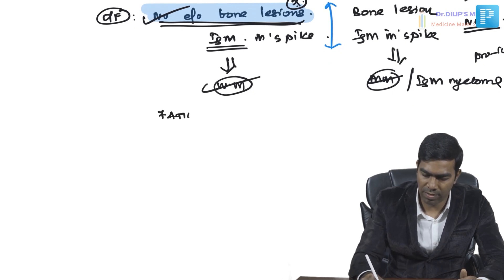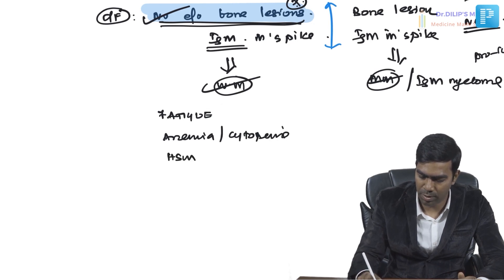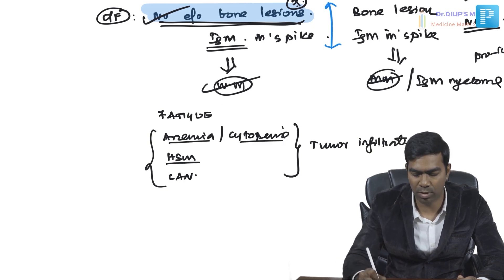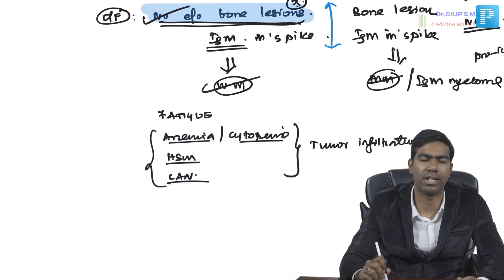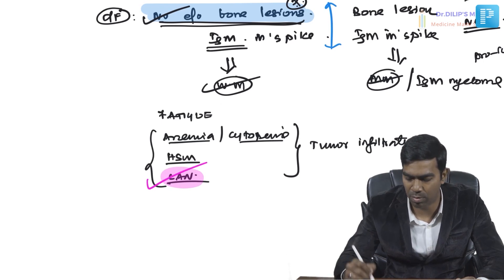Other clinical features include fatigue, anemia, and other cytopenias such as leukopenia and thrombocytopenia. Patients can also develop hepatosplenomegaly and lymphadenopathy, all due to tumor cell infiltration of the bone marrow, liver, spleen, and lymph nodes. Lymphadenopathy is a very important differentiating factor, as multiple myeloma patients do not typically have significant lymphadenopathy.